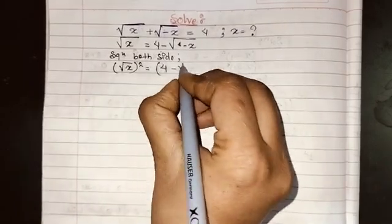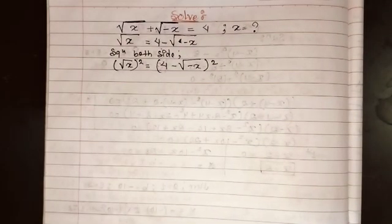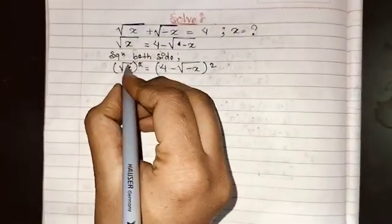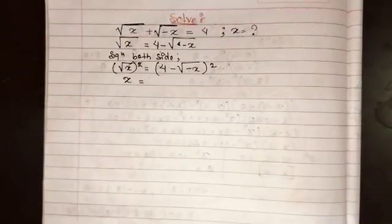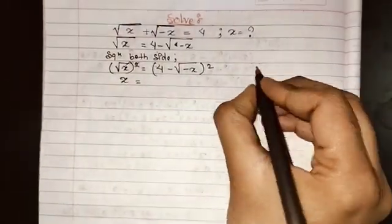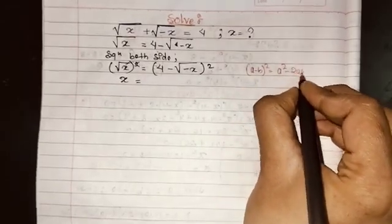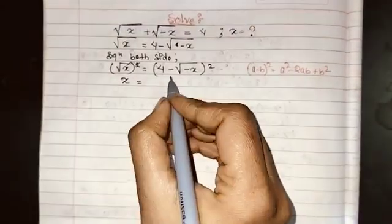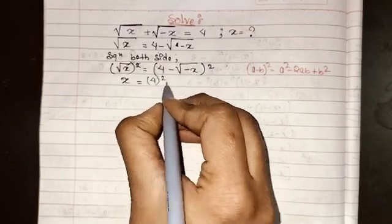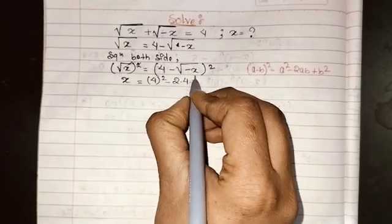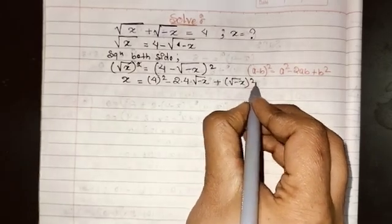Squaring both sides gives us (√x)² = (4 - √(-x))². The square root and square cancel on the left, leaving x. The right side is in the form (a - b)², and we know that (a - b)² = a² - 2ab + b². Here a = 4 and b = √(-x), so we get 4² - 2(4)(√(-x)) + (√(-x))².